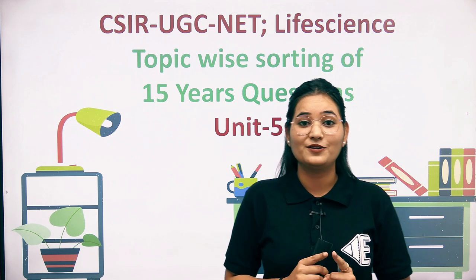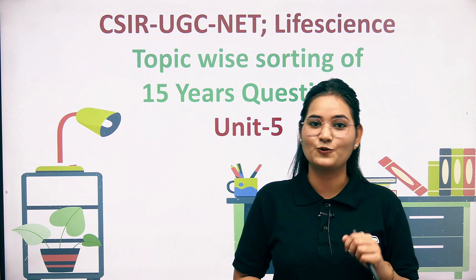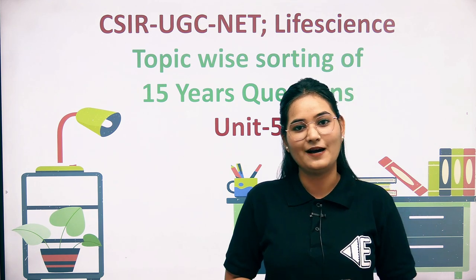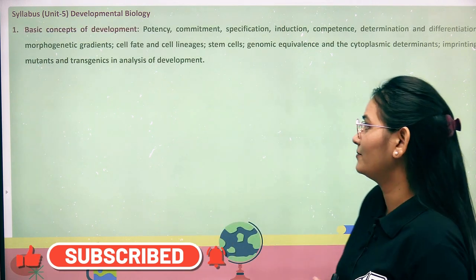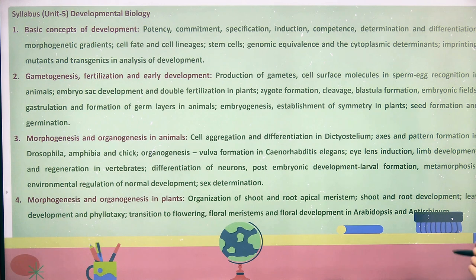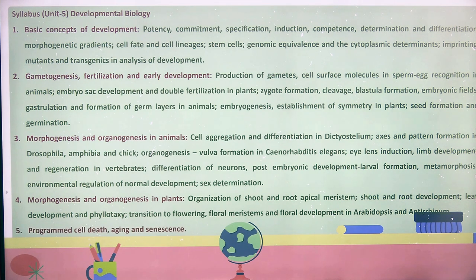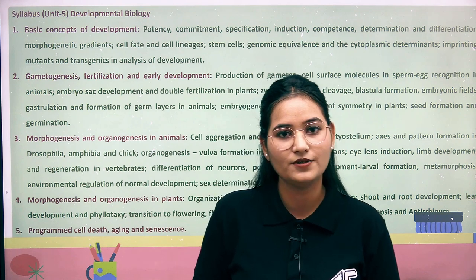Now, let's talk about Unit 5, which is Developmental Biology. This unit has a total of 5 sections: basic concepts of development, gametogenesis, fertilization and early development, morphogenesis and organogenesis in animals, morphogenesis and organogenesis in plants, and programmed cell death. So there are 5 sections in total.